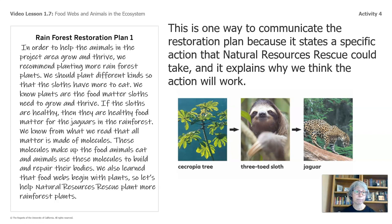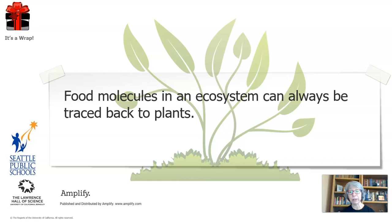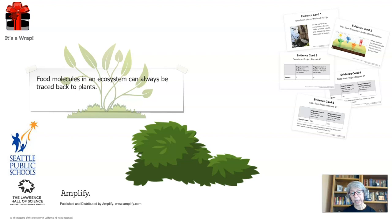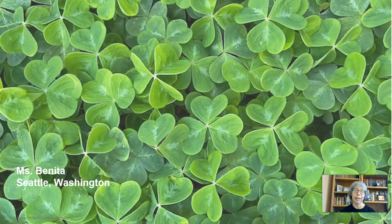This is one way to communicate the restoration plan because it states a specific action that Natural Resources Rescue could take and explains why we think the action will work. Let's review what we accomplished today: we learned that food molecules in the ecosystem can always be traced back to plants; we used evidence cards to firm up our scientific argument; and we made an action plan to plant more plants in the project area and collect more data to see what happens. Thank you so much for joining me. Chapter two and chapter three have been done by my friend Heather, who is a teacher in the Denver public school district. Bye.